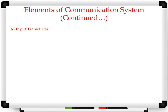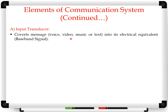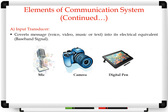First, input transducer. A transducer is an electronic device which converts one form of quantity into another. Here, the transducer related to electronic communication converts a physical quantity into its electrical equivalent, or in reverse. The input transducer converts a message — which can be voice, video, music, or text — into its electrical equivalent. This electrical equivalent of the original information is called the baseband signal. Examples of input transducers include a microphone, which converts voice signals into electrical equivalents; a camera, which converts pictures or video into electrical form; and a digital pen, which converts handwritten material into digital format.